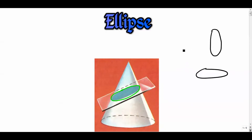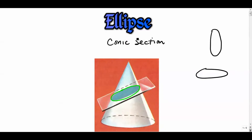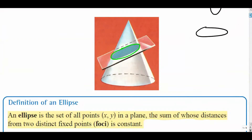An ellipse is just a stretched out circle, that's all it is. If you're looking for animations, there's a link to one of the better conic section animations in one of my earlier videos — I think it was in my parabola video. You can also search the web for conic section animations to get a really good idea of what these look like. This is our third conic section and we're ready to begin our study of ellipses.